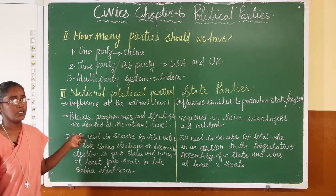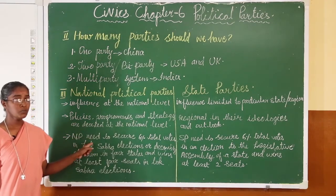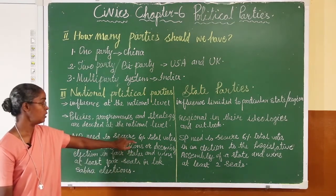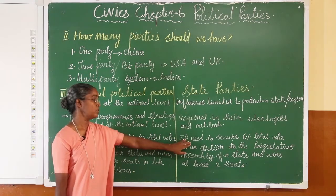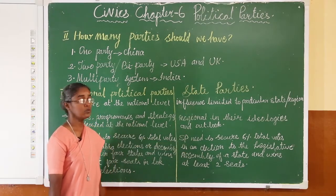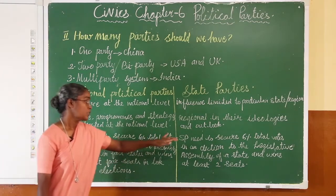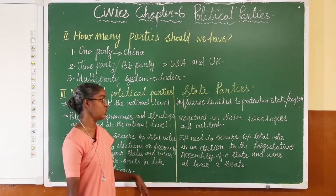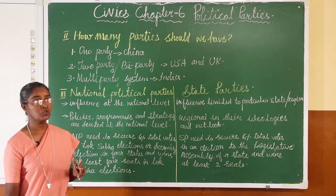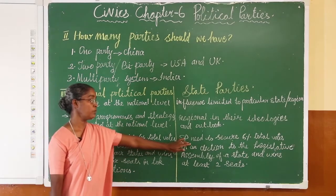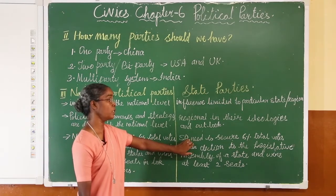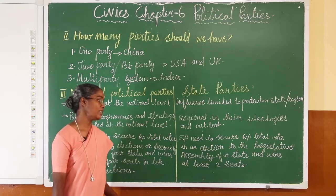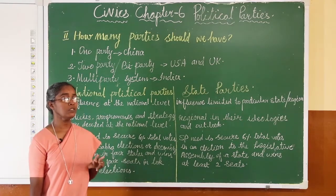An important criterion: to be recognized as a national party, a party needs to secure 6% of total votes. Similarly, a state party also needs to secure 6% of total votes — but the difference is that a state party must win these 6% of total votes in the state assembly election (legislative assembly of the state), and they must win at least 2 seats in that state.